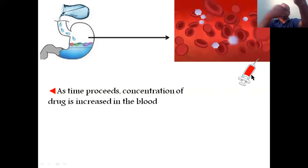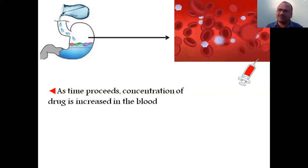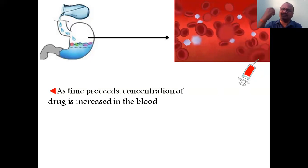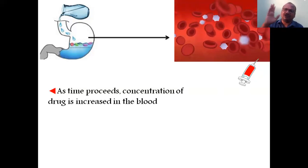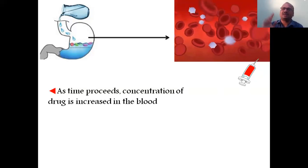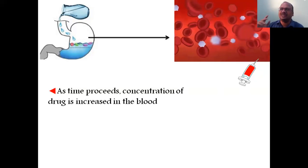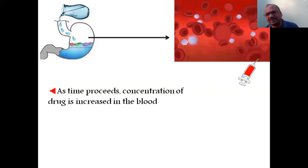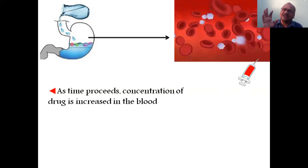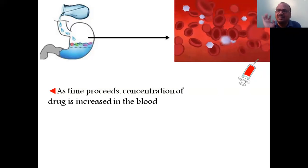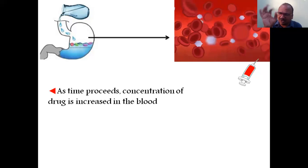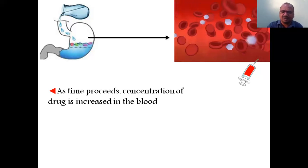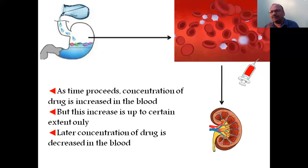If you want to prove this, take blood samples from a patient who has consumed the drug — at 10 o'clock, 11 o'clock, 12 o'clock, 1 o'clock — every one hour. Check the drug concentration using HPLC, UV-visible spectrophotometer, or mass spectrometry. You will find the drug concentration in the blood is definitely going on increasing — no doubt about that.